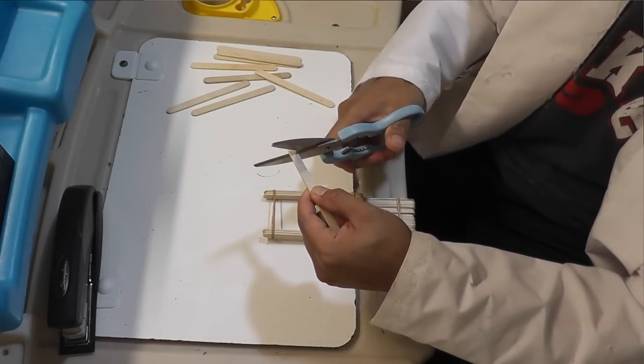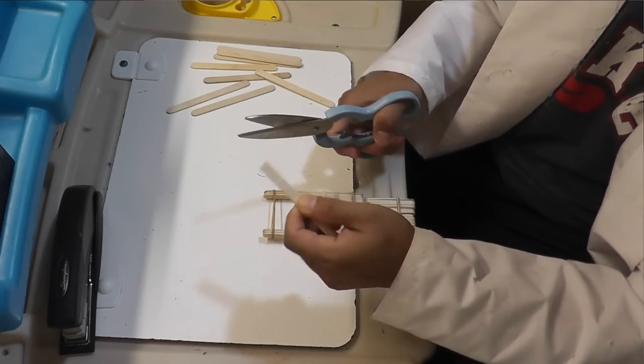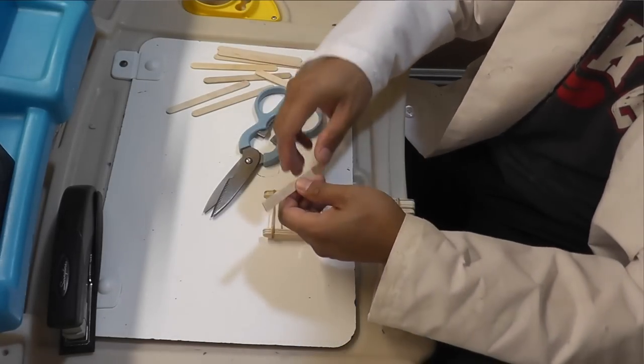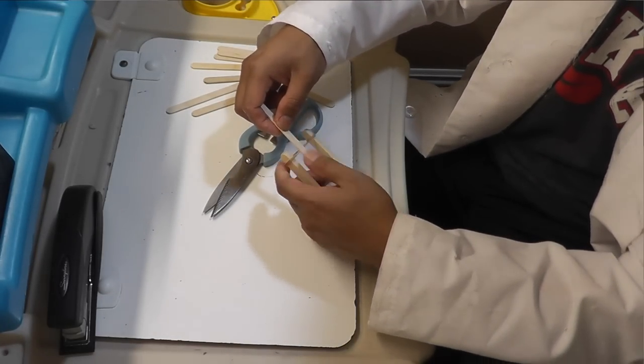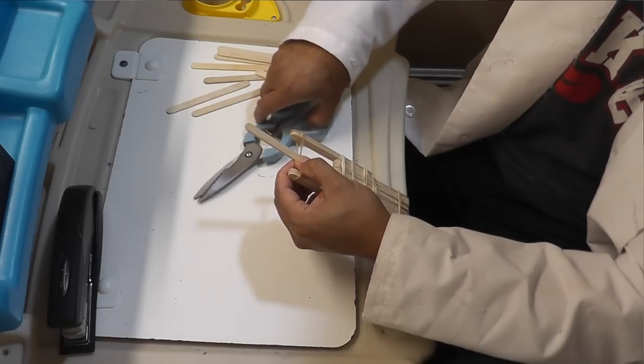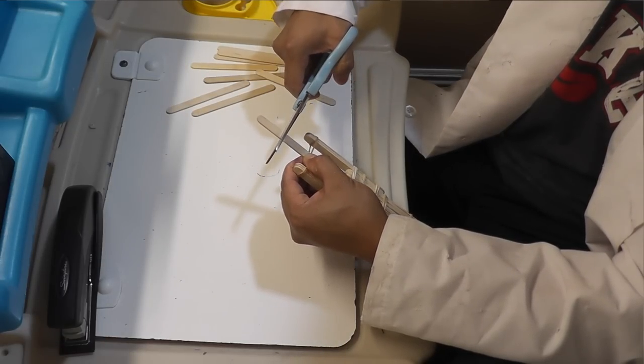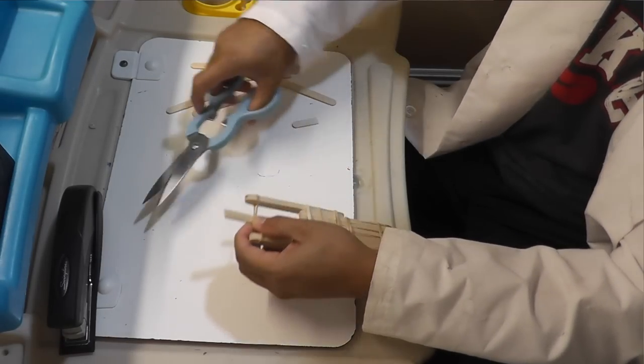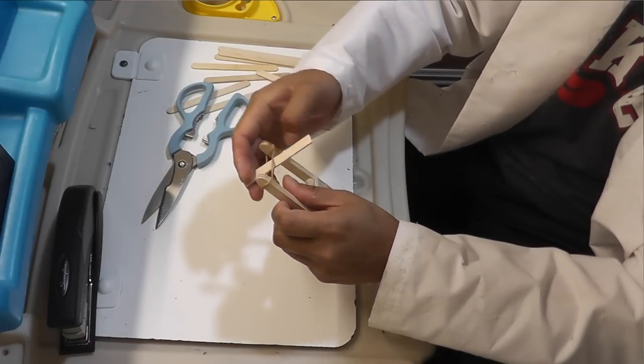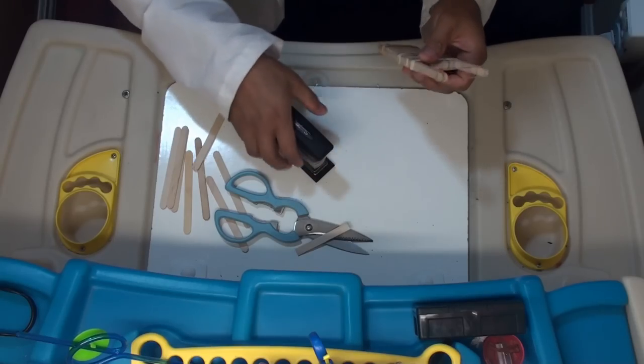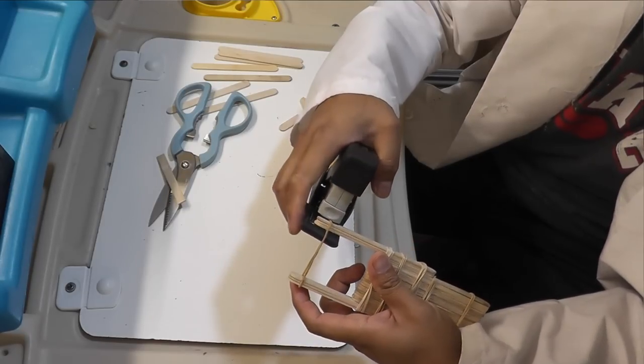Now this is the propeller. You can trim it using a big scissor. There you go. And right there. You can experiment with different sizes of propeller. There is actually an effect.